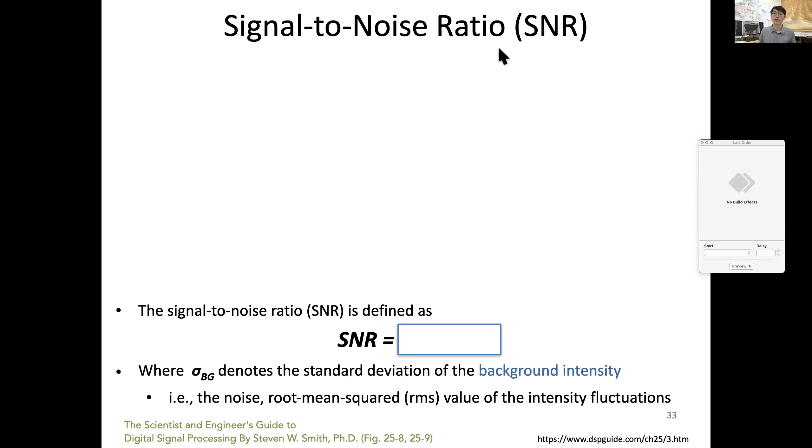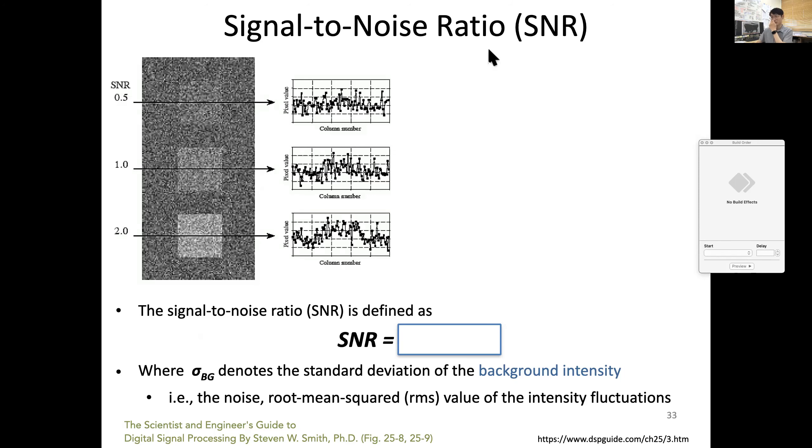This is common in other fields such as telecommunication. It's better for me to give you an example. Here there's a signal, there's a square, but it's very obscure and hard to know because the signal level is actually smaller than the level of noise.